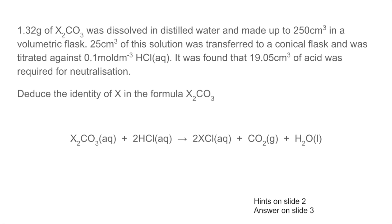It's then made up to 250 cm³ in a volumetric flask. Then they've taken 25 cm³ of that solution, put it into a conical flask and carried out a titration using 0.1 mol per dm³ hydrochloric acid. It was found that the average titre was 19.05 cm³ of acid.